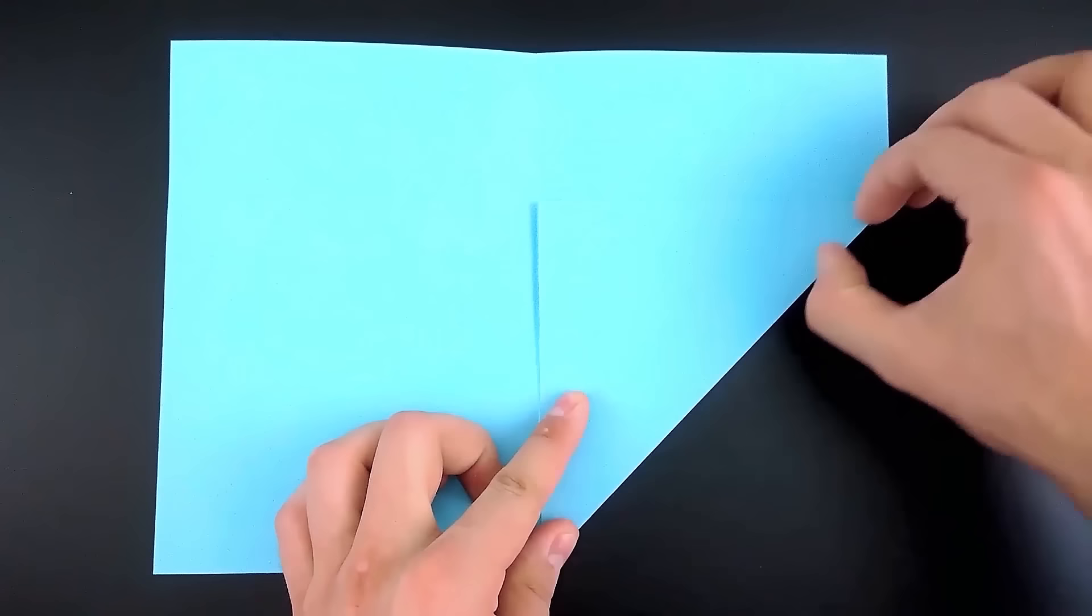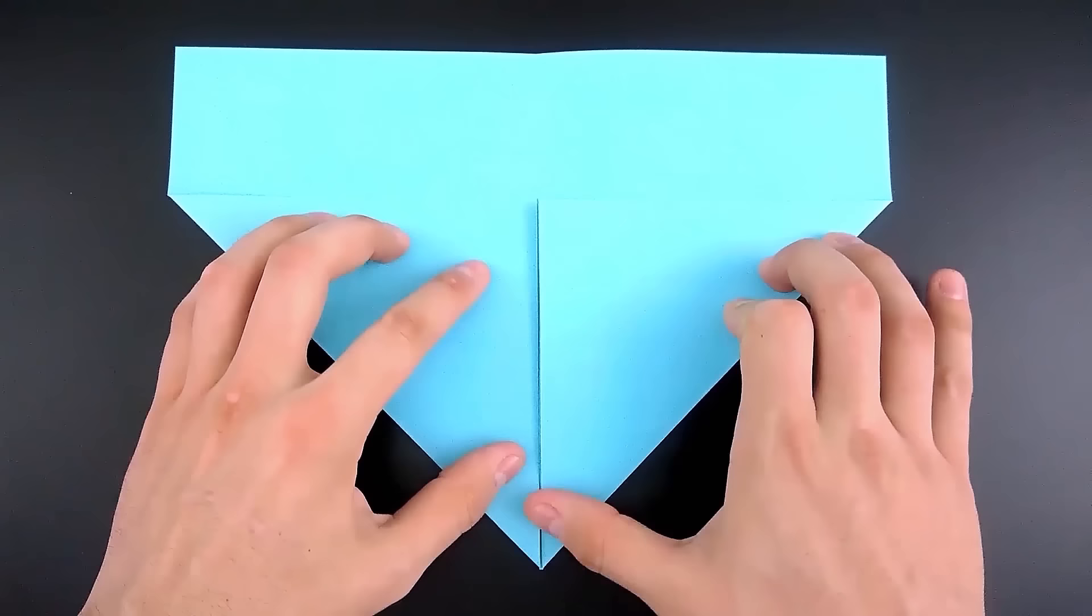Now, on the bottom side we need to bring both halves to the middle, creating two new diagonal folds. First this one, and then the other.